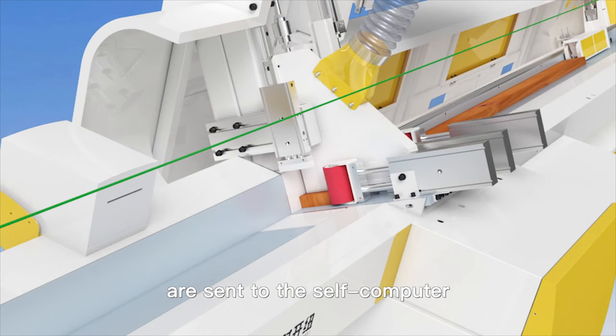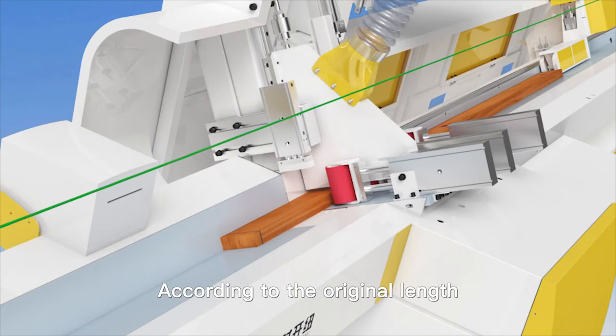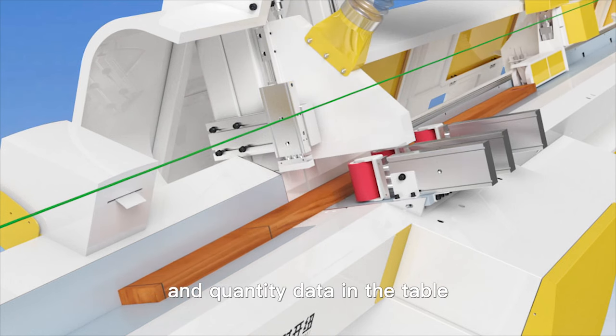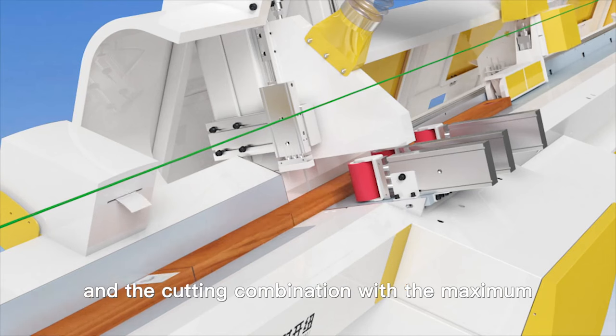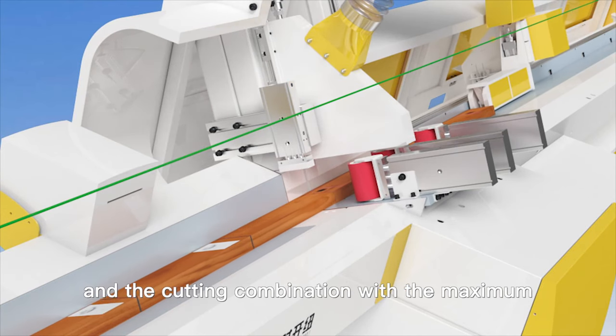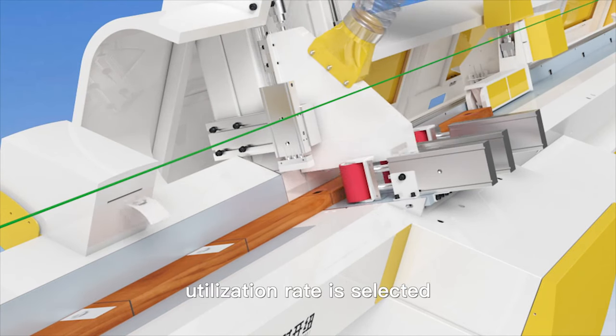The length and marking data are sent to the self computer. According to original length and quantity of data in the table, the calculations optimize cutting and layout, and the cutting combination with the maximum utilization rate is selected.